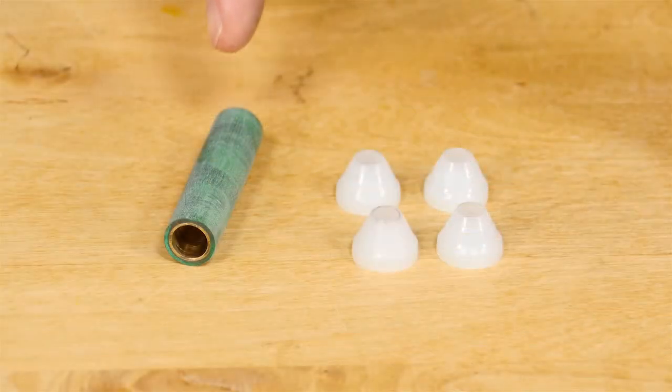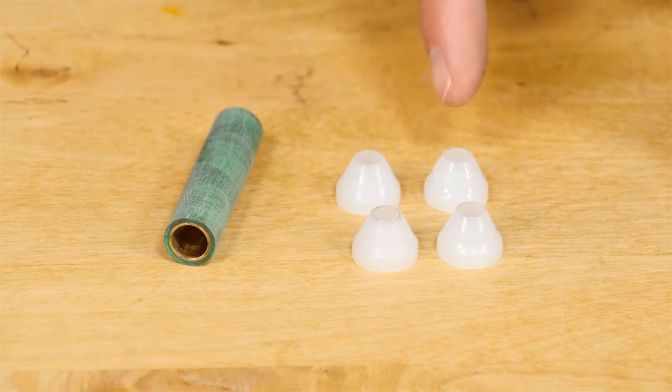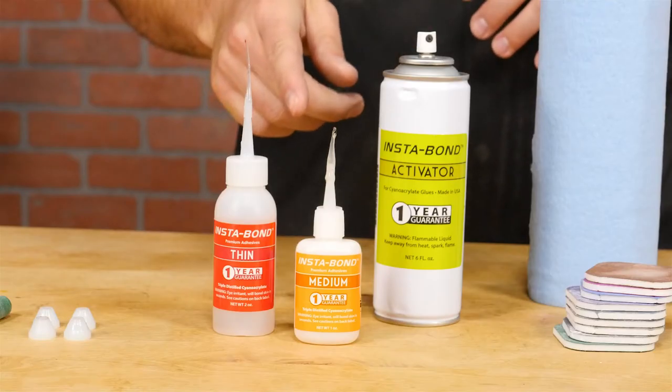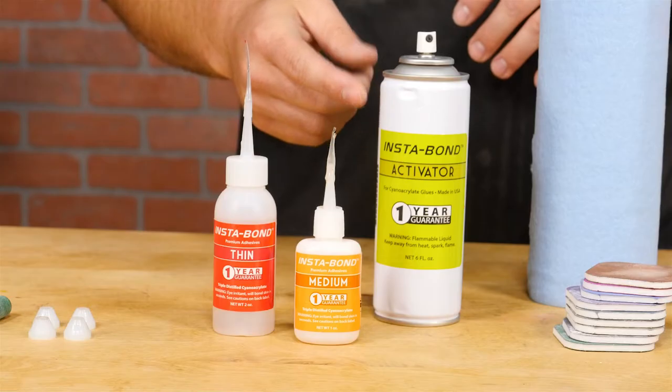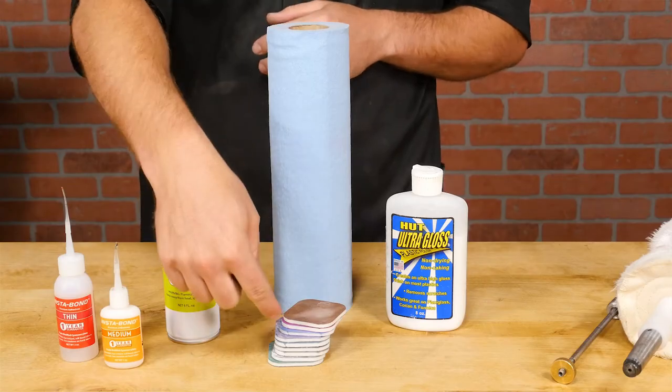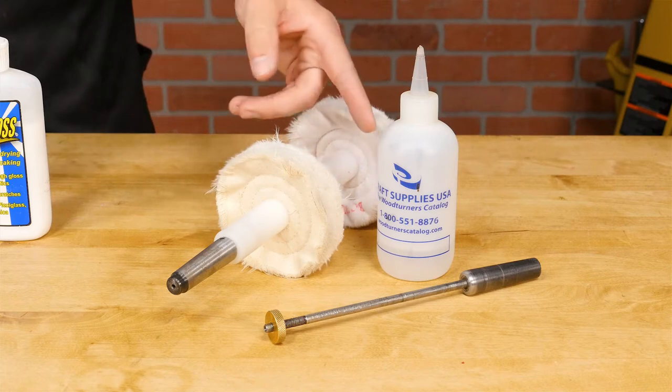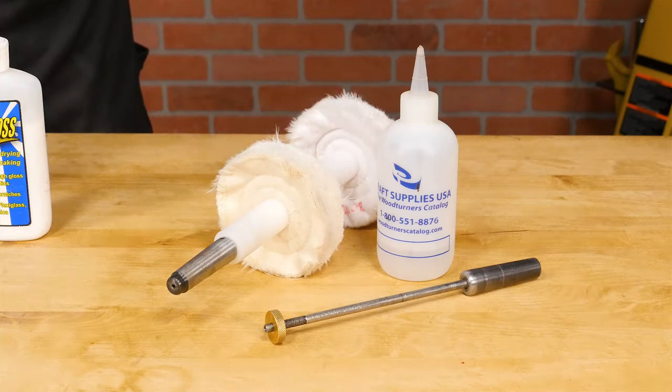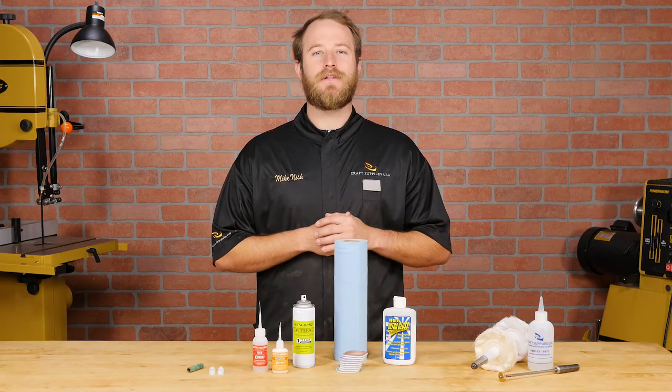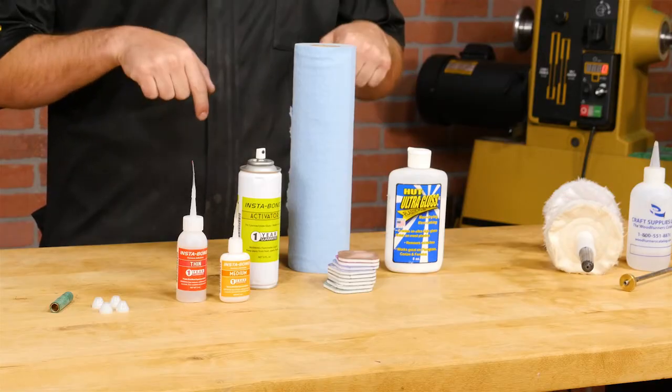To apply a CA finish, you'll need a turned pen or project, non-stick pen bushings, some thin and medium CA glue, spray activator, paper towels, micro abrasive pads, plastic polish, and some standard turning tools and supplies. And as a resource for this video, we'll include links to all these products in the description below.